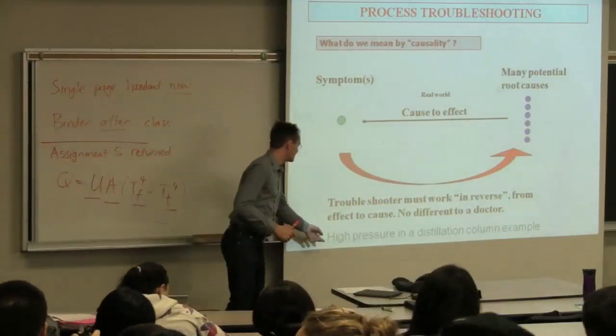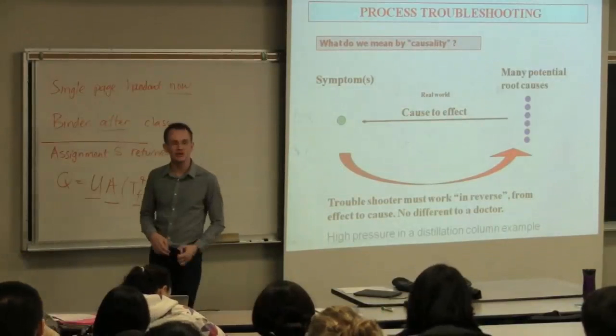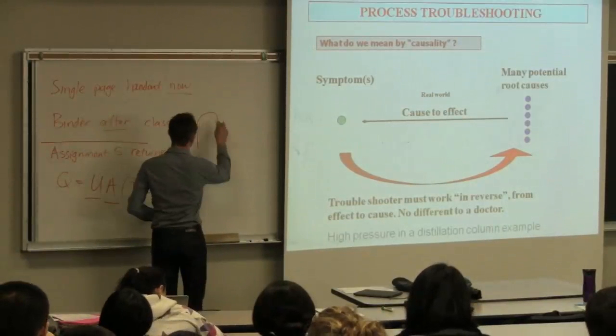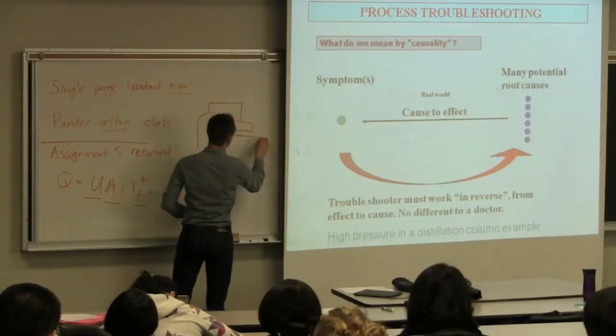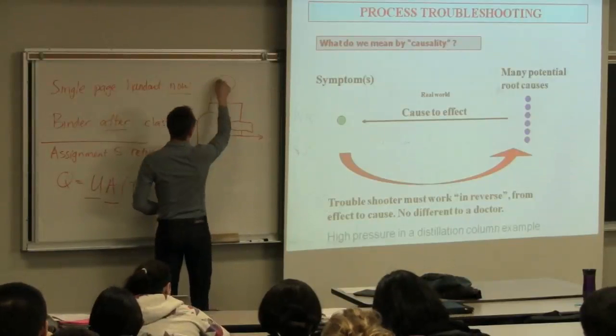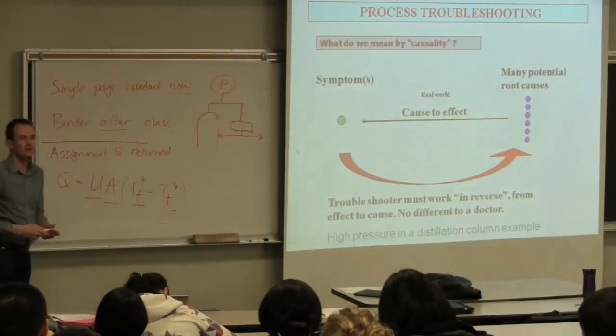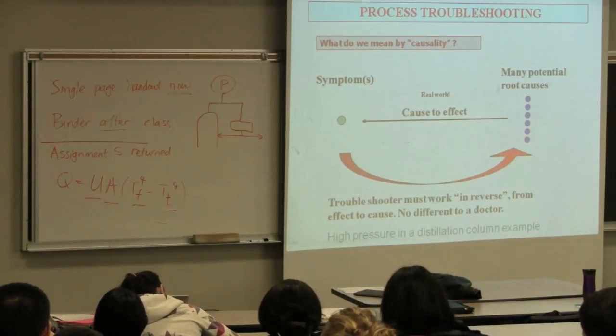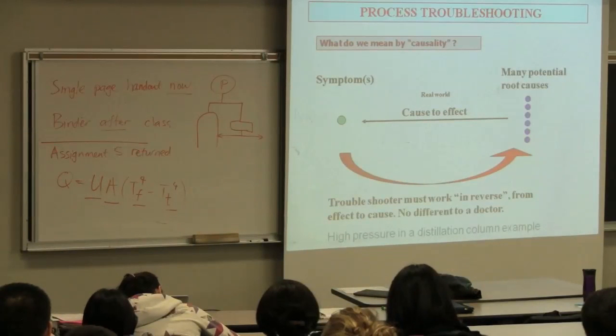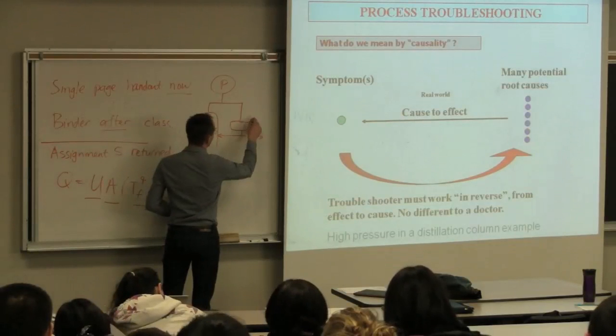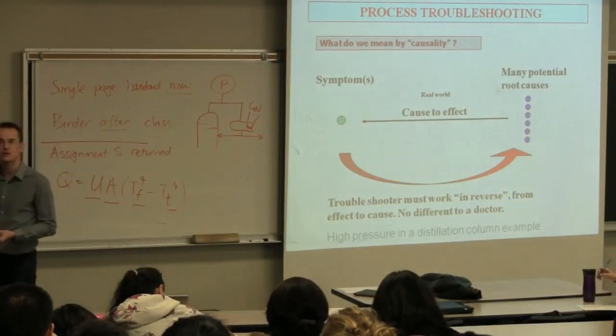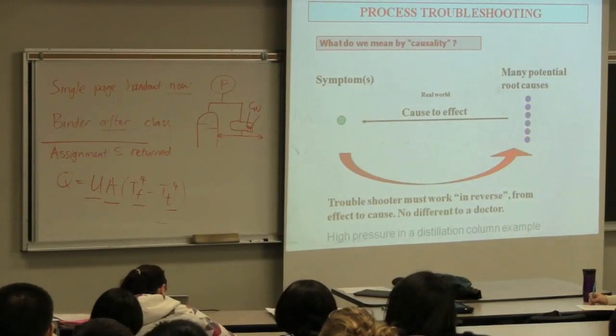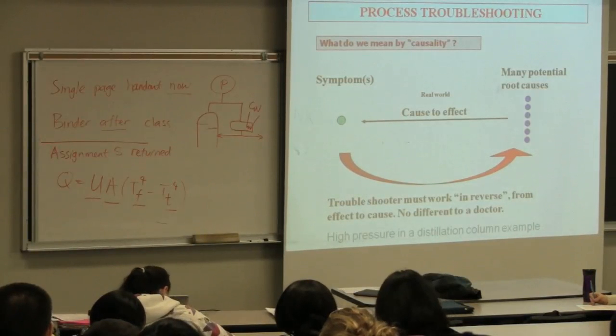Another example related to our area: the pressure at the top of the distillation column. At the top of my distillation column, I'm taking this material off. It comes to a condenser. I feed some material back to the top of the column. This pressure is high. That's the symptom. It's higher than normal. What could be potential causes in this case? Cooling water temperature is higher than normal. Your tubes in your heat exchanger are fouled. Your cooling water flow rate is lower than normal. The valves that regulate flow might be blocked or closed more than normal. So there's a number of potential causes.